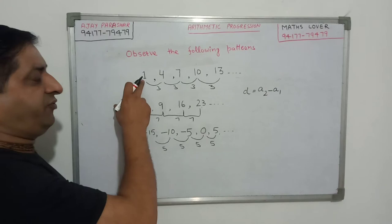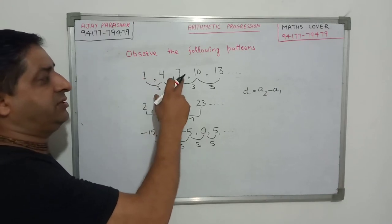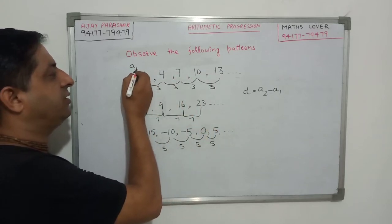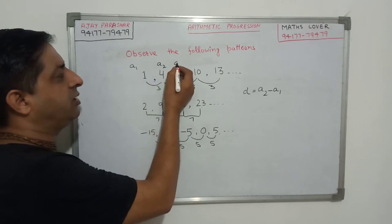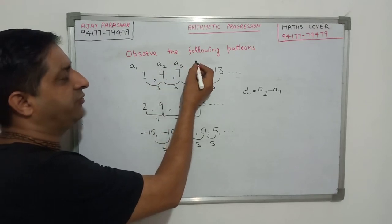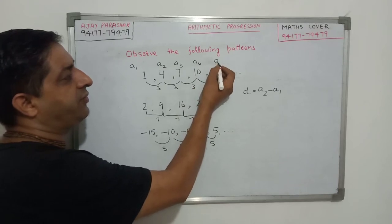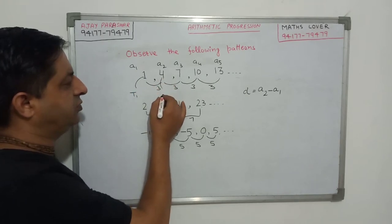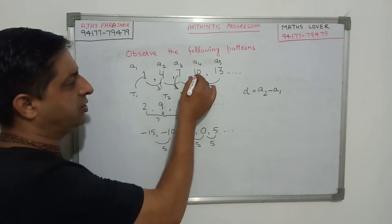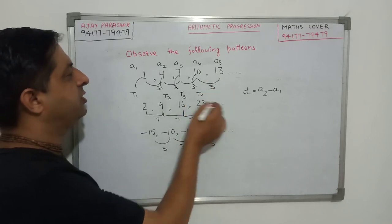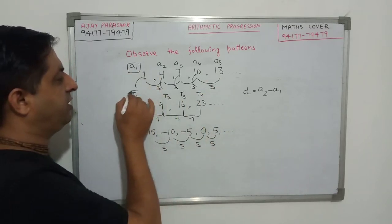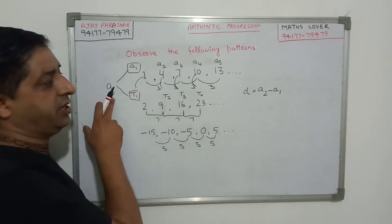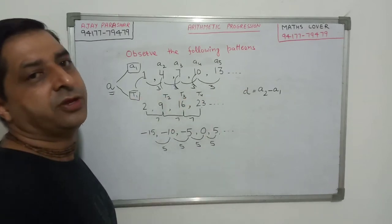Now this we call 1st term. This we call 2nd term. This is the 3rd term, this is the 4th term and this is the 5th term. We write the 1st term by A1 and the 2nd term by A2, the 3rd term by A3, the 4th term by A4 and the 5th term by A5. We also denote them by T1, T2, T3, T4 and so on. 1st term is A1 or T1 we also write it as A. The 1st term of AP is always known by A and the common difference is known by D.